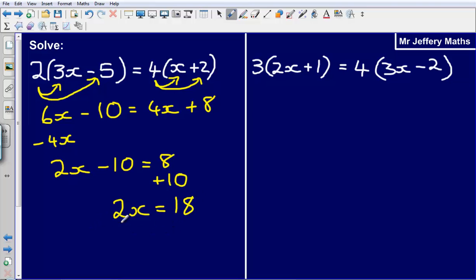And now to undo this multiplied by 2, I'm just going to do the opposite of multiplied by 2 which is divide by 2. So that leaves me with x is equal to 18 divided by 2 which is 9.